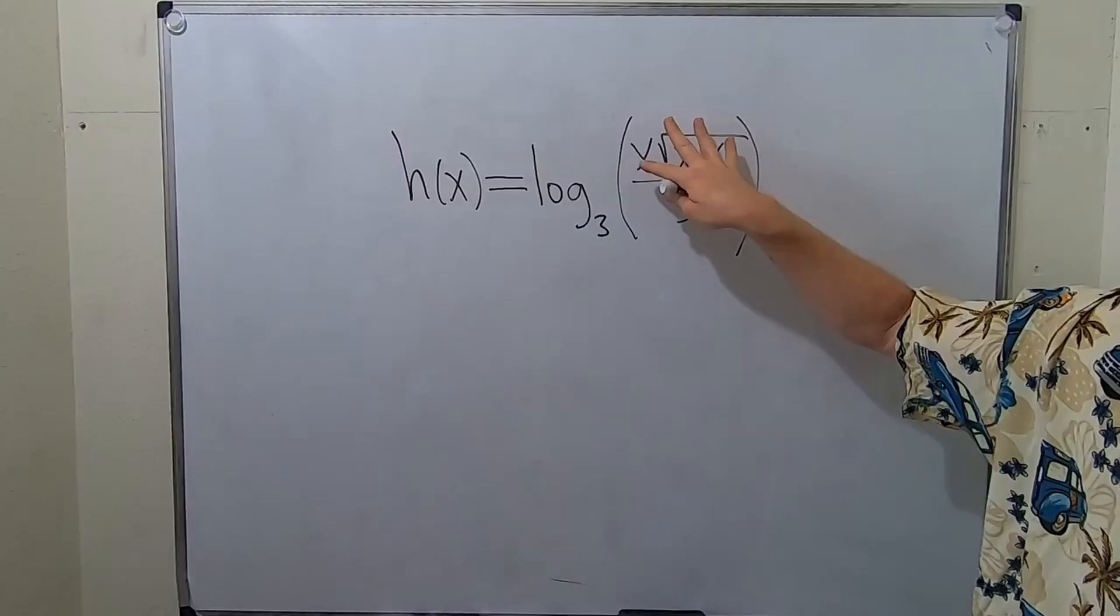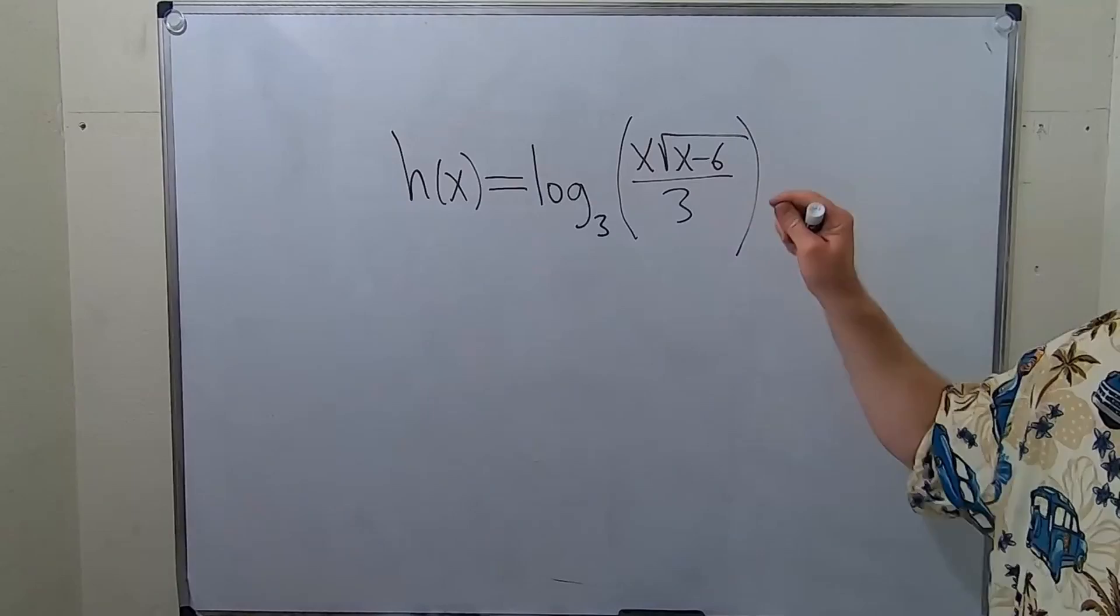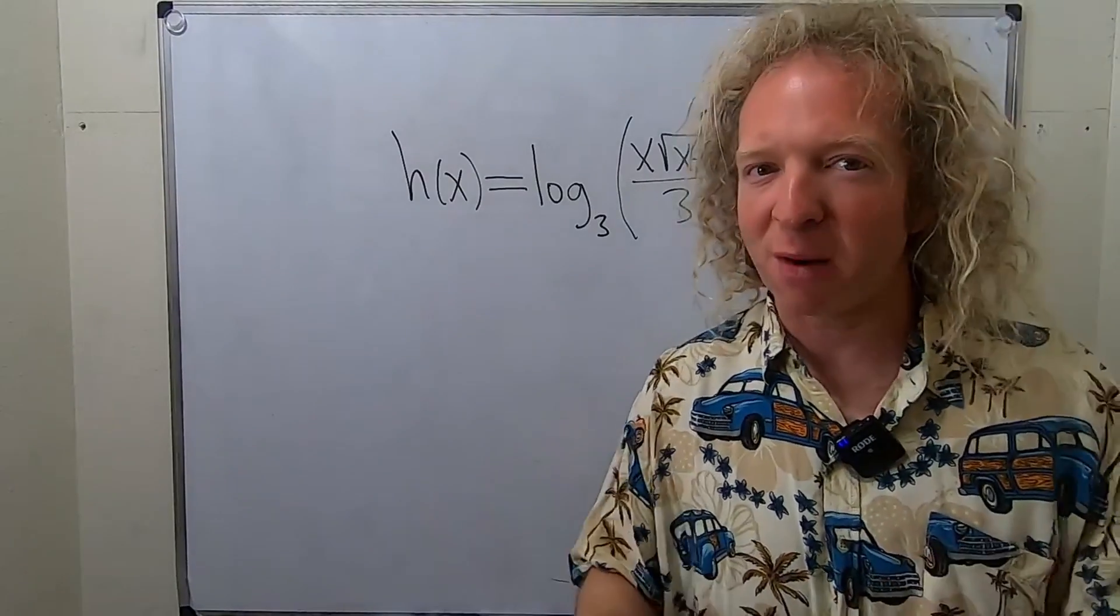we're going to end up having to take the derivative of this inside piece using the chain rule and that's no good. So let's go ahead and start by rewriting this first using the properties of logs.